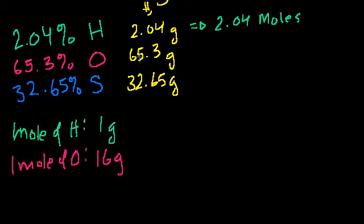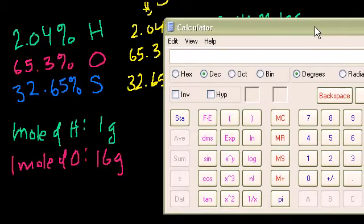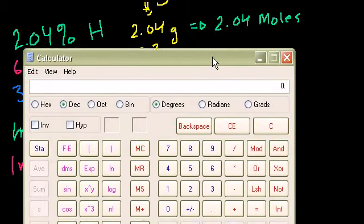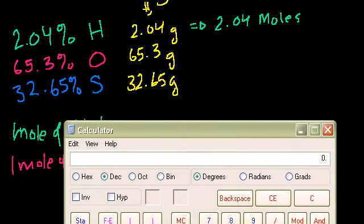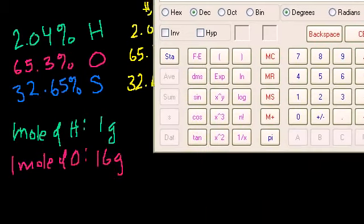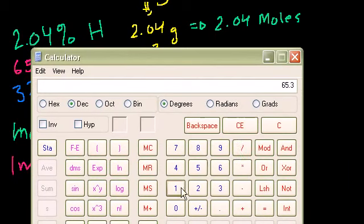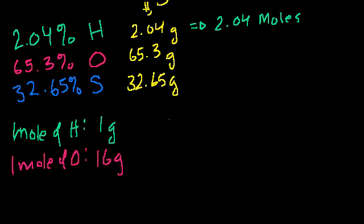Let's see. So if we take 65.3 grams of oxygen, and we have 16 grams per mole, so you divide by 16. It equals 4.08125. I don't want to get too precise here, but let me just write that. 4.08 moles of oxygen.